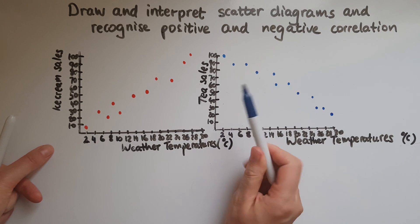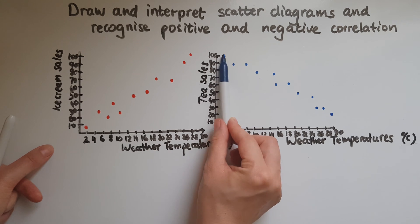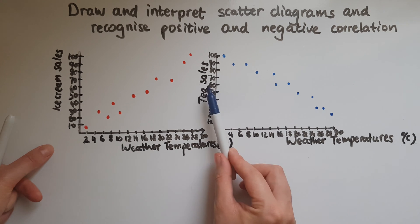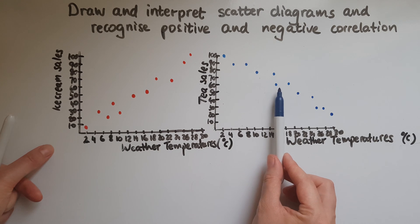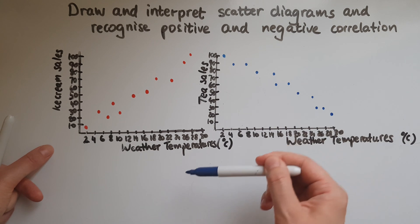So as you can see when temperatures were cold, were low, tea sales were high. As the temperatures actually increased, tea sales dropped. So increase in weather temperatures, drop in sales.